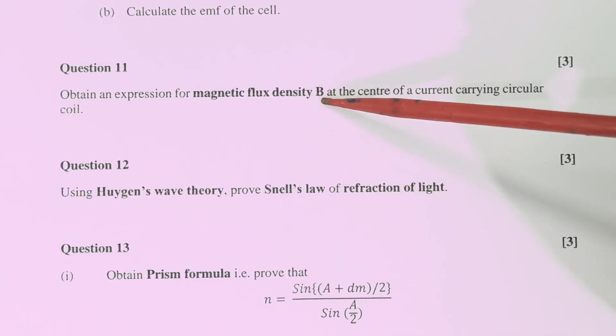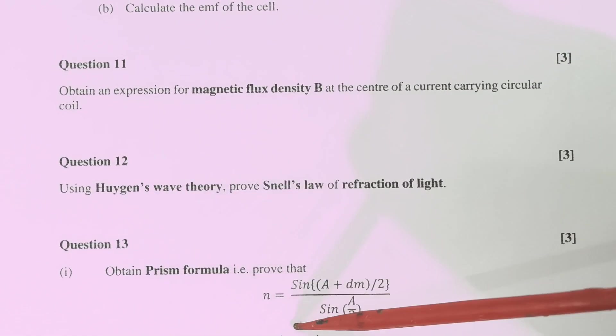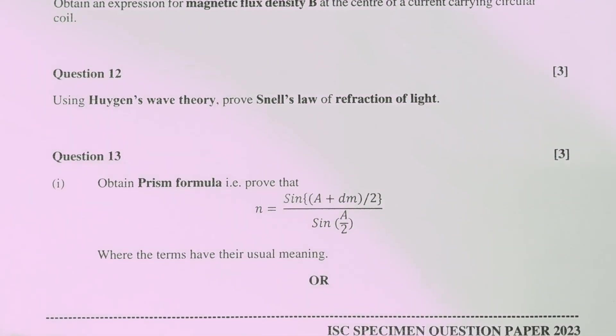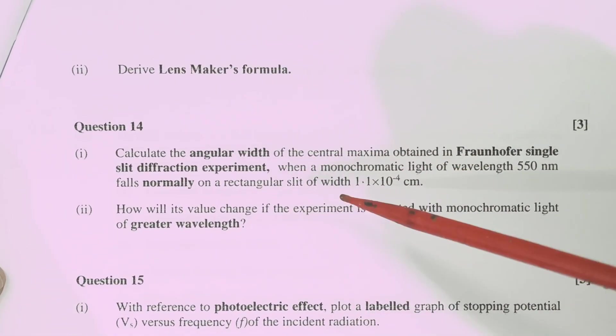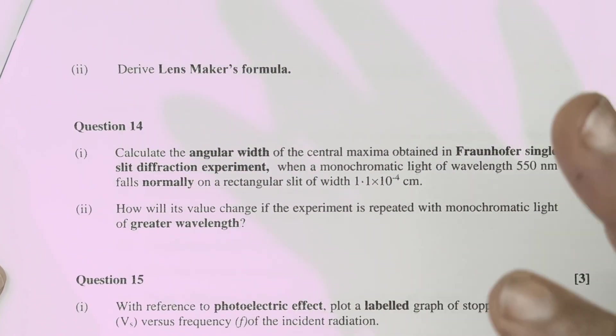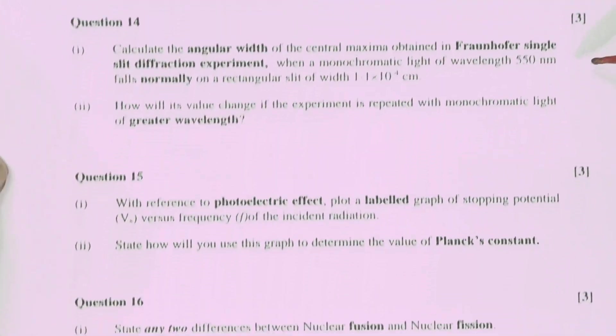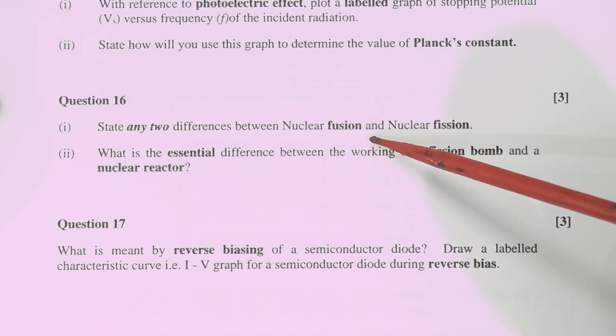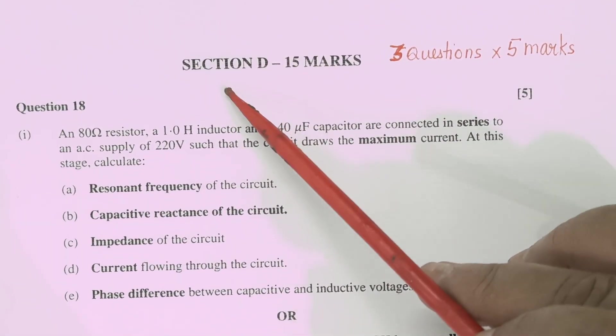These two questions are from magnetism and these two questions are from optics. Now in optics you again have a choice. Either you derive the expression for prism or you derive lens maker's formula. So two questions will be there in which you will have a choice. Then question number 14 again long answer question. 15 long answer question. 16 and 17 long answer question. Now come to the last section that is section D.